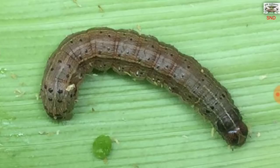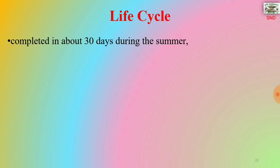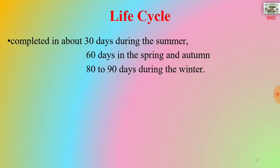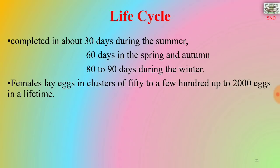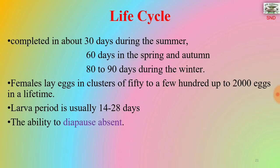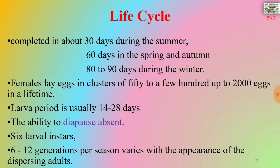Here you can observe the 4 dark spots on the abdominal segments. The life cycle of this army worm is completed in about 30 days during summer, 60 days in spring and autumn, or 80 to 90 days during winter. Females lay eggs in clusters of 50 to a few hundred, up to 2000 eggs in a lifetime. The larval period is usually 14 to 28 days. The ability to diapause is absent. It has 6 larval instars, with 6 to 12 generations per season.